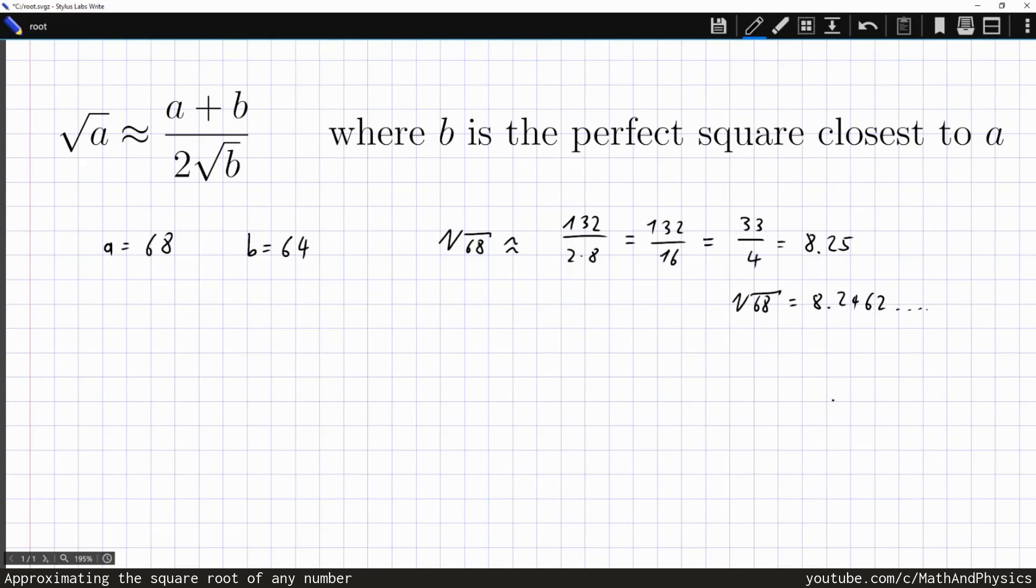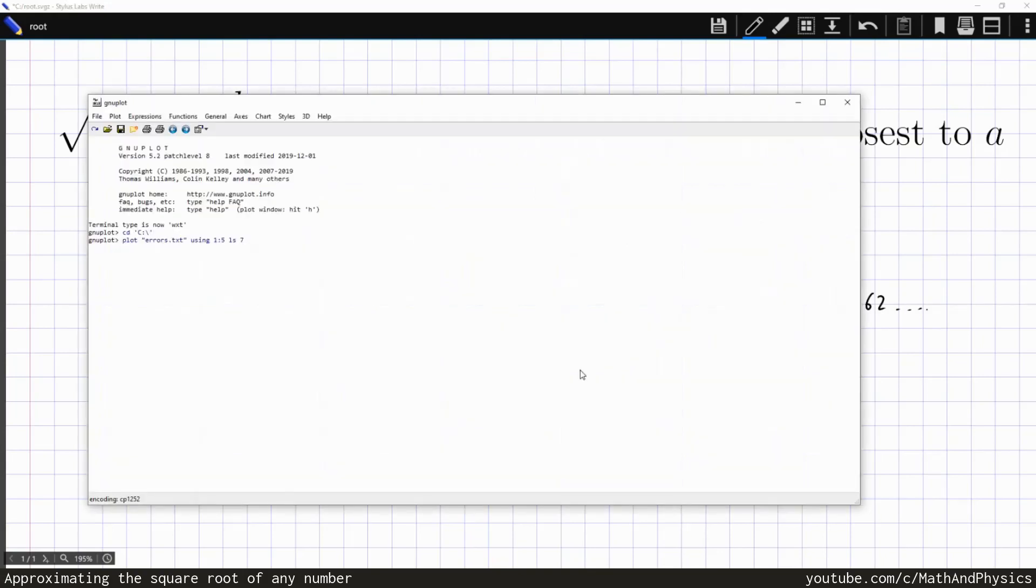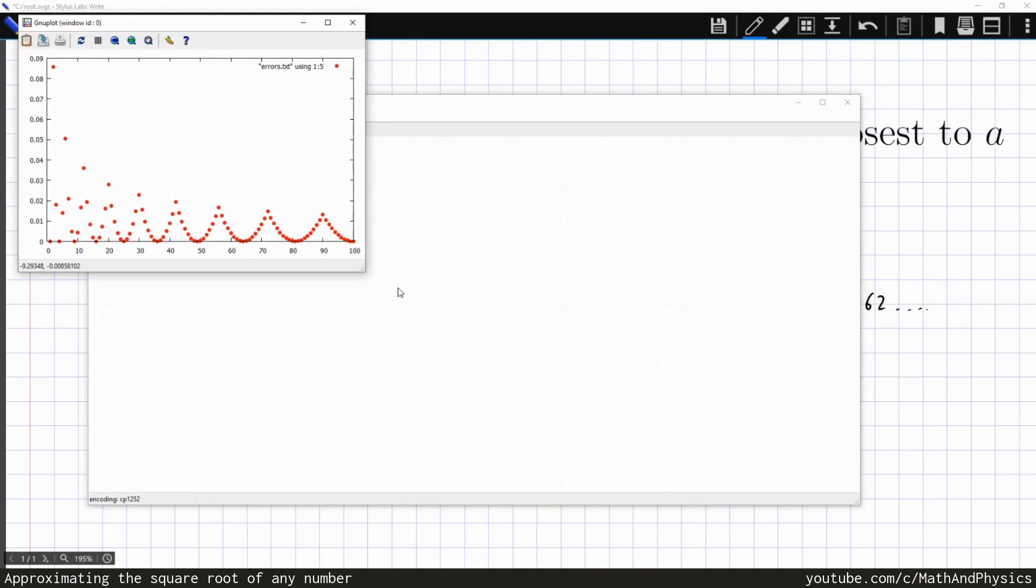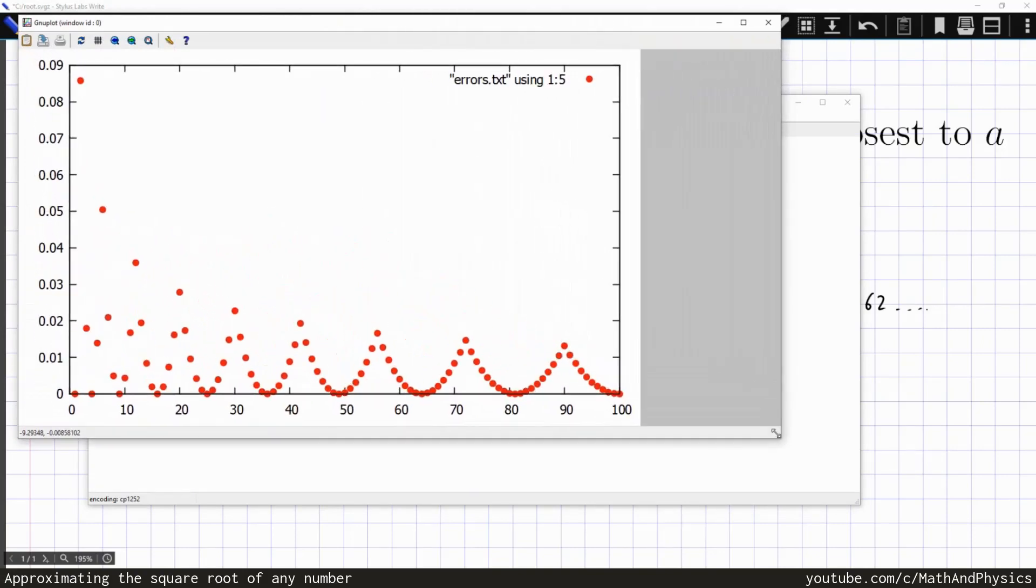Now you might say, oh, I just got really lucky, or I picked an example where the approximation works really well. So I asked myself, what is the error for all the integers from 1 to 100? So we're going to jump into gnuplot real quick, and here you see the absolute error for this approximation formula for all the integers from 1 to 100.